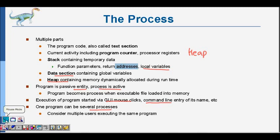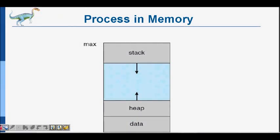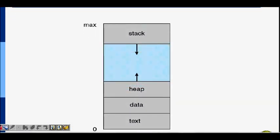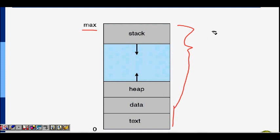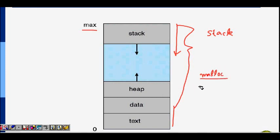Let's see how processes are allocated memory. There is a maximum amount of space given to a process. It maintains a stack — used to store return values, function arguments, and local variables — which grows downwards. The heap is where dynamic objects are stored, such as when you call malloc in C or use the new operator in C++. Then there is a data section for global variables and a text section for the code.